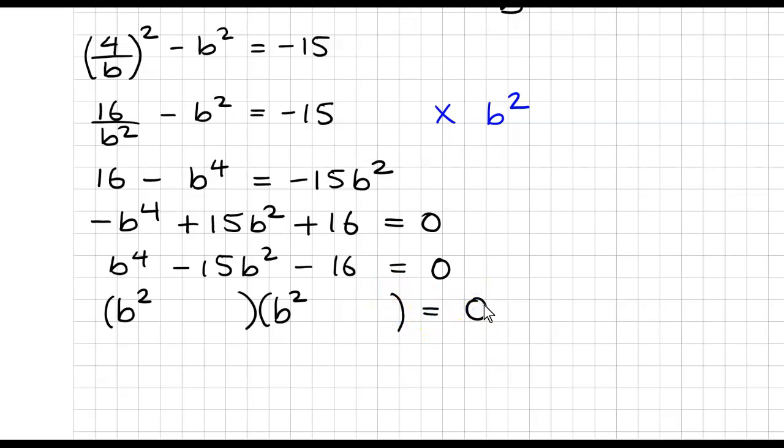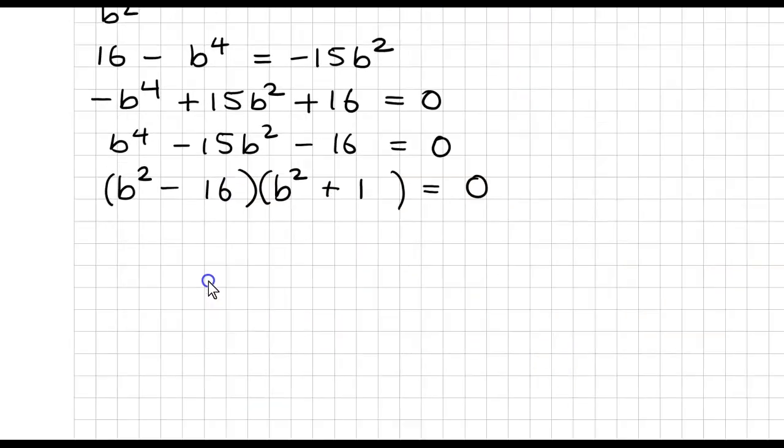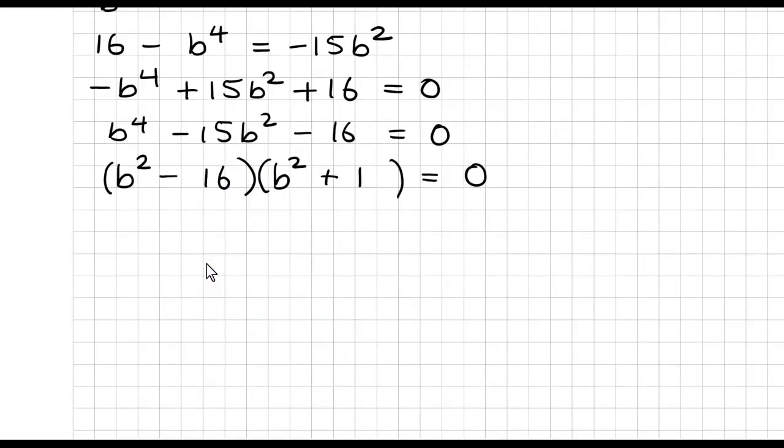So the factors of 15 that will sum to give me 16 are obviously 15 and 1, sorry, 16 and 1. So I'll use a minus 16 and I'll use a plus 1. So this, then if I look at this one here, this will give me that B squared is equal to 16 and this will give me that B squared is equal to minus 1.